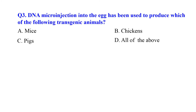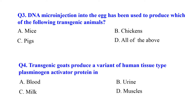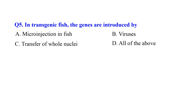Question 3: DNA microinjected into an egg has been used to produce which of the following animals? Mice, chickens, pigs, or all of the above. Question 4: Transgenic goats produce a variant of human tissue plasminogen activator protein in — blood, urine, milk, or muscles. Question 5: In transgenic fish, genes are generally introduced by — microinjection, viruses, transfer of nuclei, or all of the above.